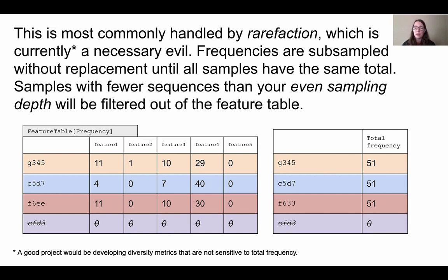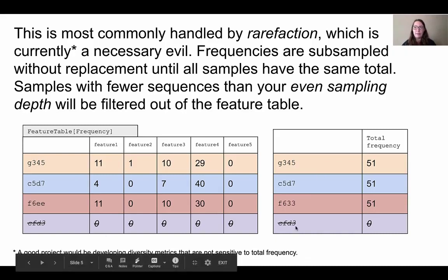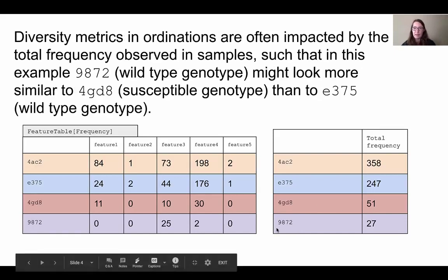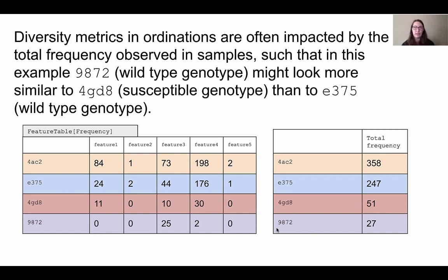What happens when we do this? Well, we lose a lot of information unfortunately. Let's start with this purple sample. Why did we lose that sample? If you remember from before, there was only a frequency of 27 within that sample, and we can't pull 51 sequences from 27 sequences without replacement. So to keep it fair, we just throw that out.